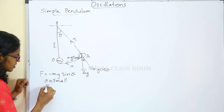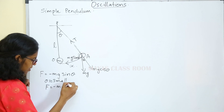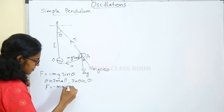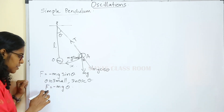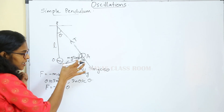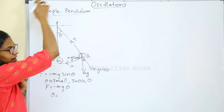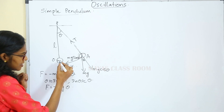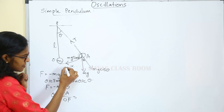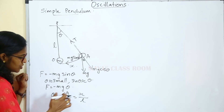From this equation, F is equal to minus mg sin theta. If theta is small, sin theta is approximately equal to theta. So restoring force F equals minus mg theta. The angle theta equals arc length divided by radius, which is OA divided by L. OA is the displacement x, and the radius is the length of the string L. Therefore theta equals x by L.